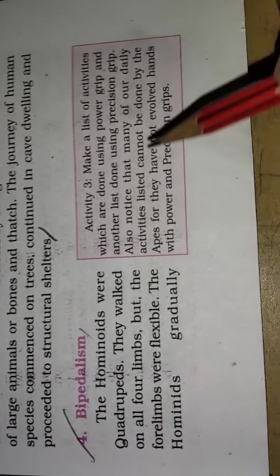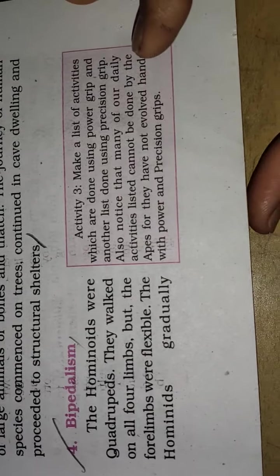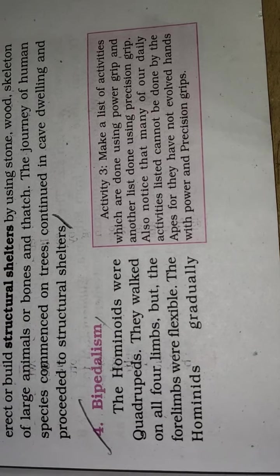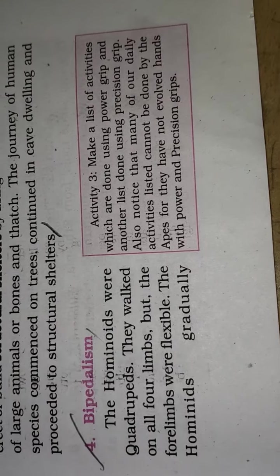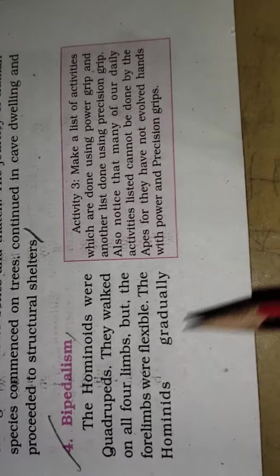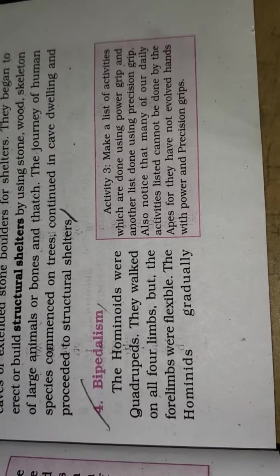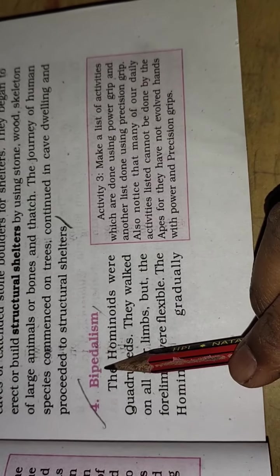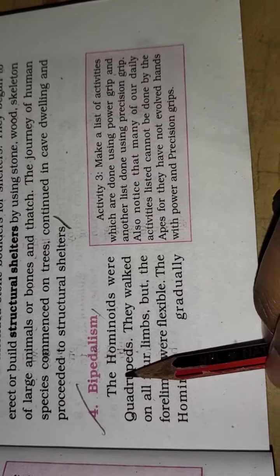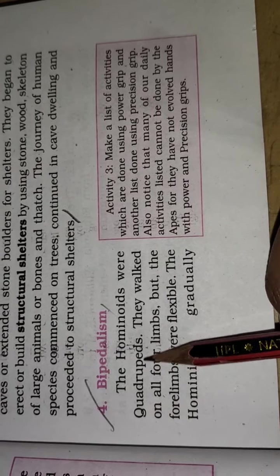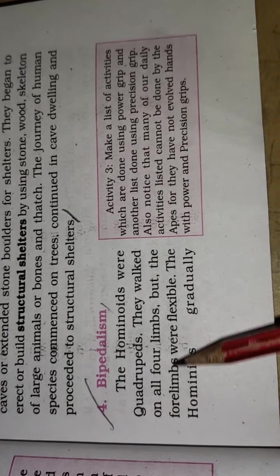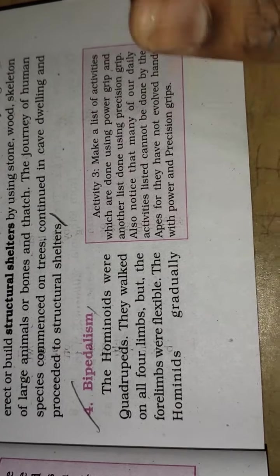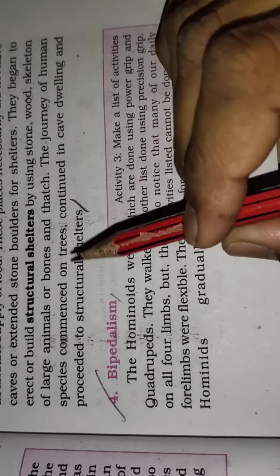In the chapter on evolution, we are looking at the importance of human evolution and how it happened. Now we are starting with the fourth point in the importance of human evolution — that is bipedalism. The humanoids were quadrupeds; they walked on their forelimbs. We are seeing the different features of humans and how they evolved.